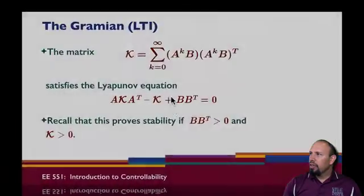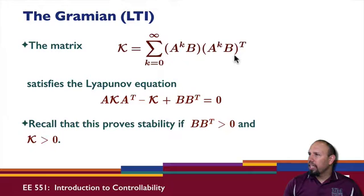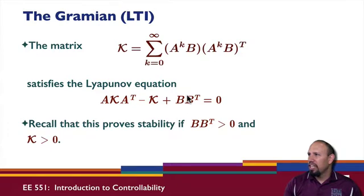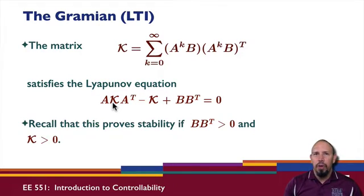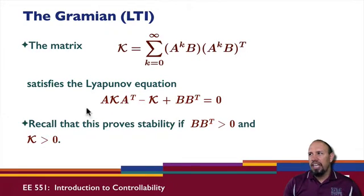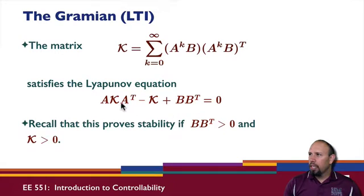This matrix satisfies a Lyapunov equation, and that's where we've seen something like this infinite summation before — it's a solution to a Lyapunov equation. Notice it's not the same Lyapunov equation as used to prove stability, because that one had A transpose on one side and A on the other, but it's still a discrete Lyapunov equation.